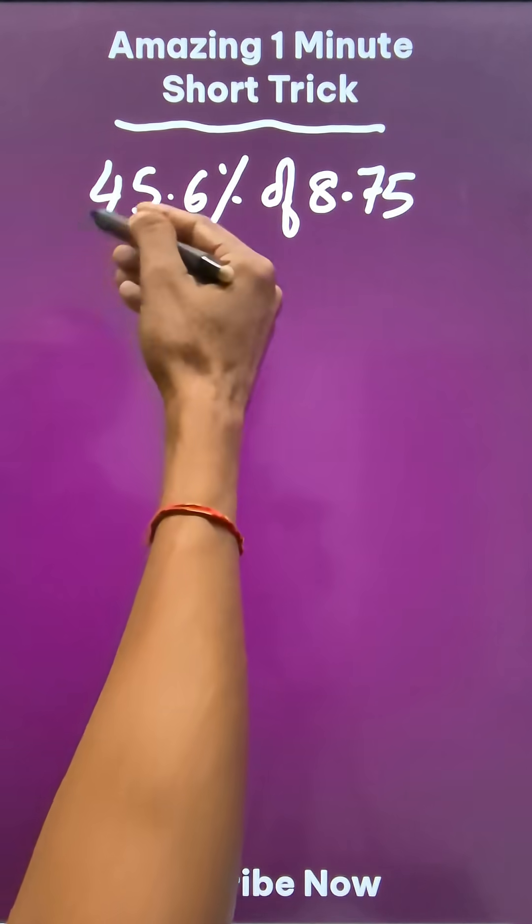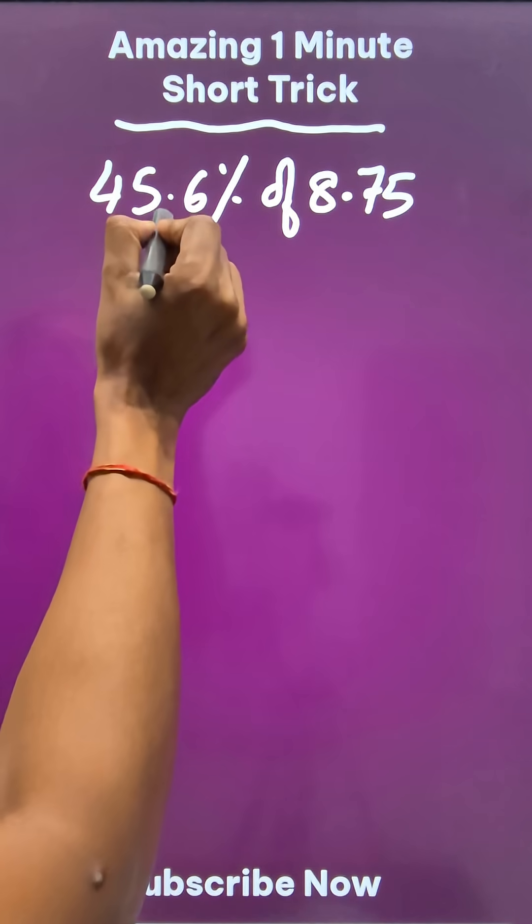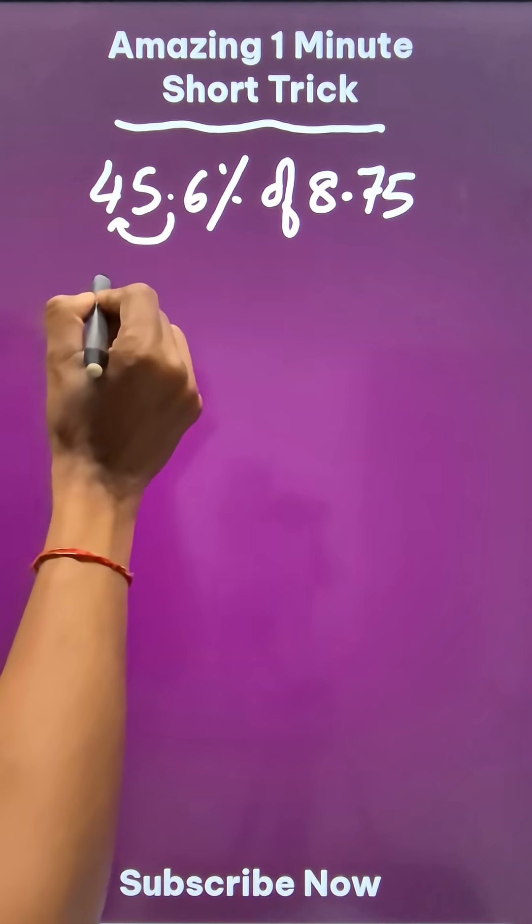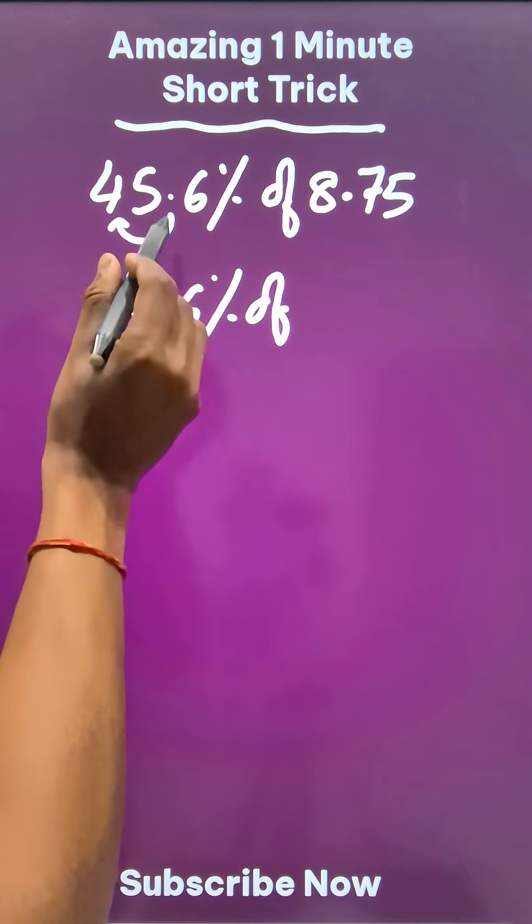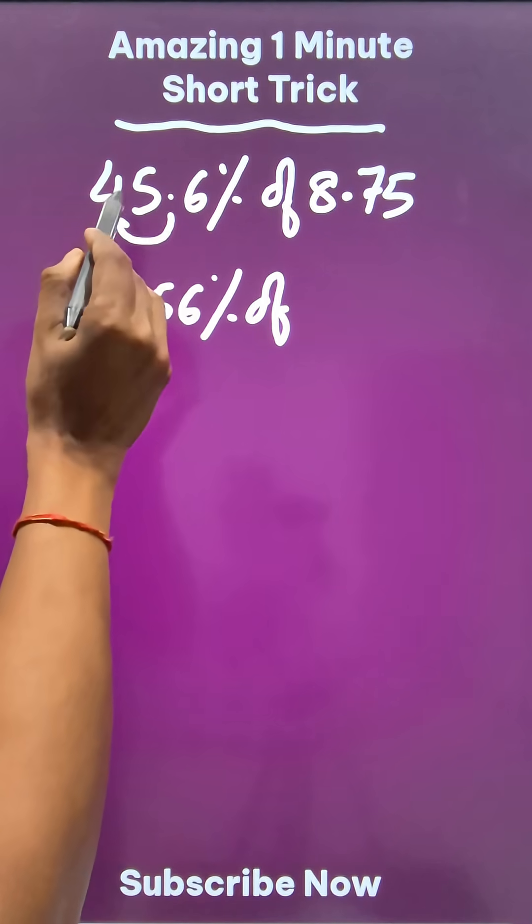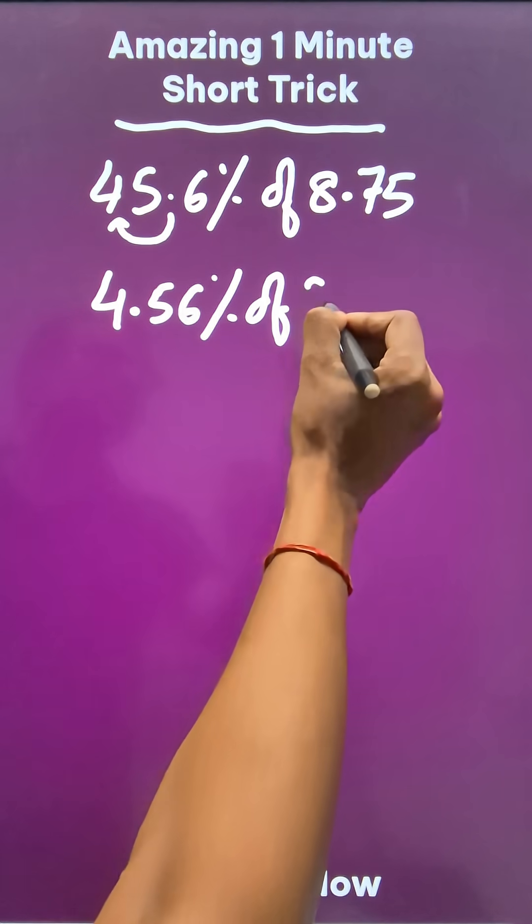Swapping the decimals is not going to change our answer. So what will I do? I will shift the decimal here. So 4.56% of - but since I shifted one decimal place towards the left here, I will be shifting it towards the right.